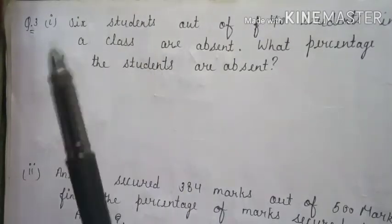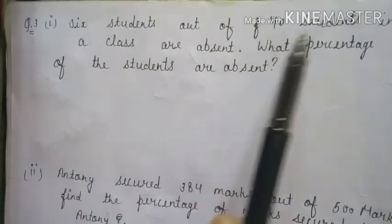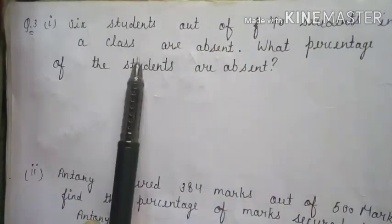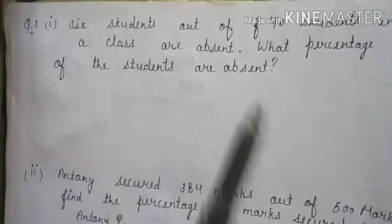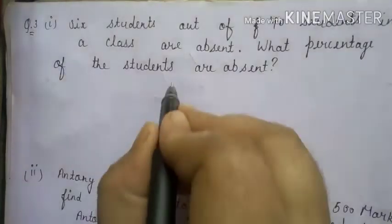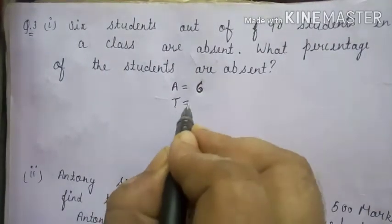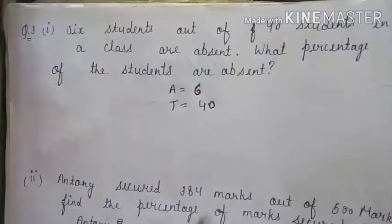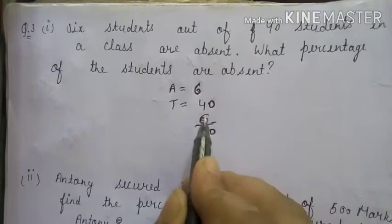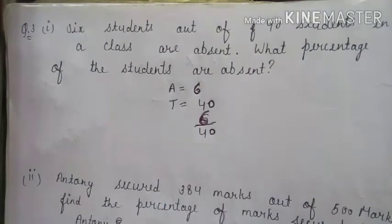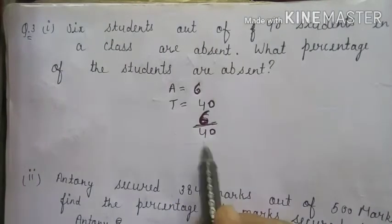Question 3, first part: Six students out of 40 students in a class are absent. What percentage of students are absent? Absent students = 6, total = 40. We write it as 6 upon 40 in fraction form.